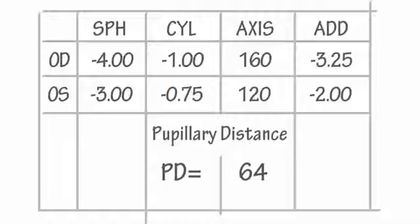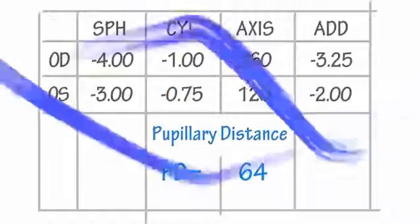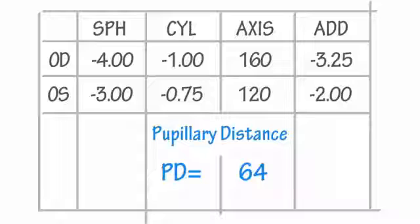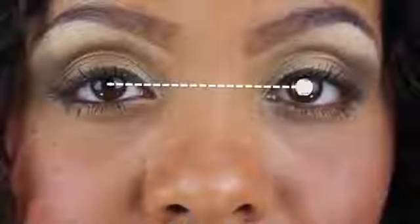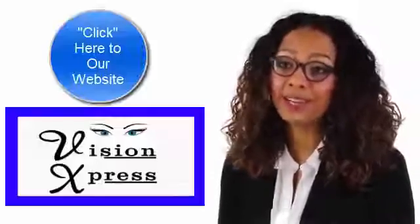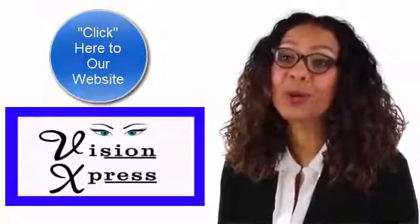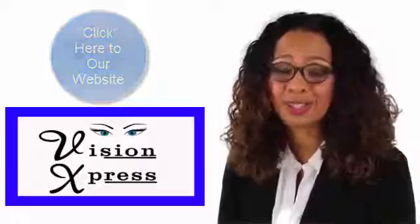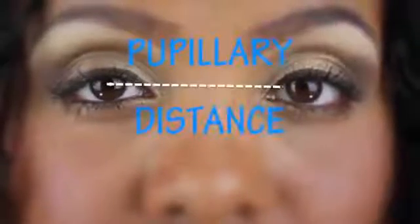And finally, we have PD, which means pupillary distance — and it's pretty straightforward. PD simply means the distance between one pupil and the other. Now, if you're panicking because you don't have PD written on your prescription, don't worry. Please click here to check our tutorial on how to measure the distance yourself.